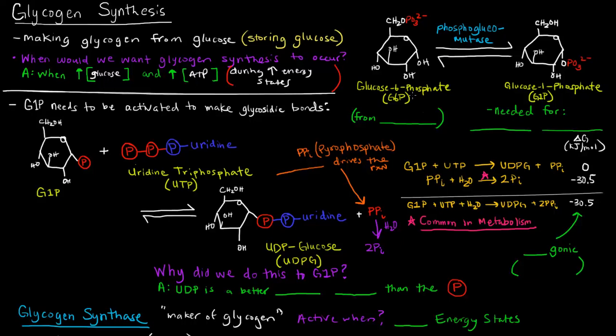So if you recall, glucose 6-phosphate from glycolysis. If we have glucose 6-phosphate and we add this enzyme, phosphoglucomutase, what this enzyme does is it isomerizes glucose 6-phosphate and just moves this phosphate group over to the 1-carbon's OH group and turns it into glucose 1-phosphate. This is needed for glycogen synthesis.